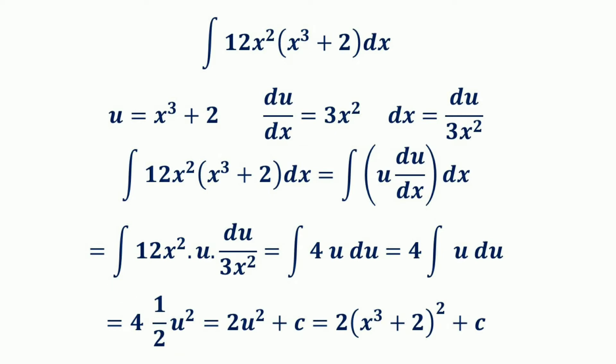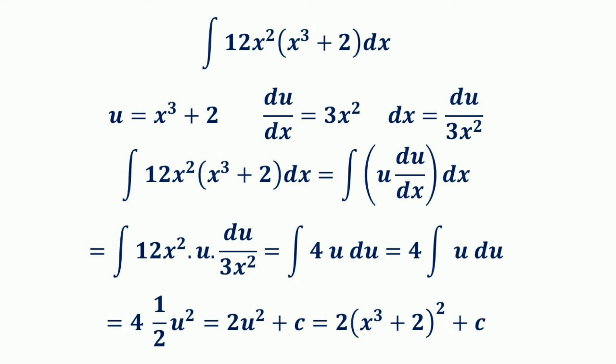Now we convert back to the original variable by substituting u = x³ + 2. So the result becomes 2(x³ + 2)² + c. You can also verify and check the answer by differentiating this result using the generalized power function rule, and you will get 12x²(x³ + 2), which matches the original integrand.